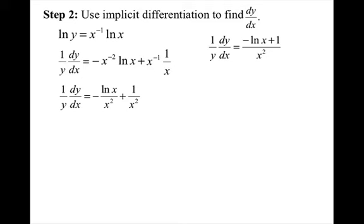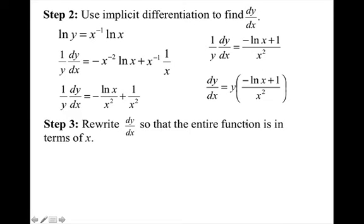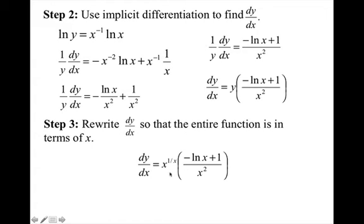Now solve for dy/dx. Multiply both sides by y, but you will have to replace y — that is step 3. You need to rewrite dy/dx so that the entire function is in terms of x. We had that y equals x to the 1 over x, so substitute that back in and we are done.